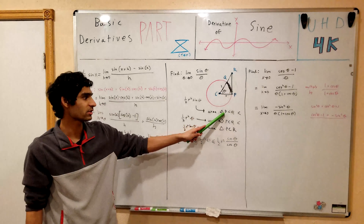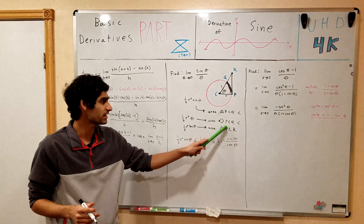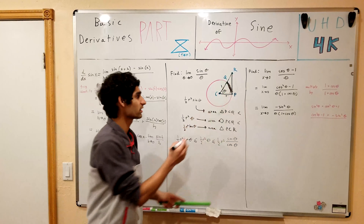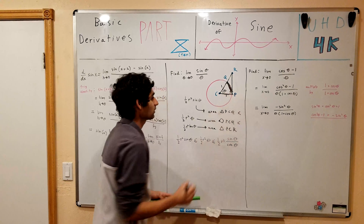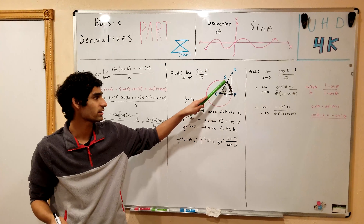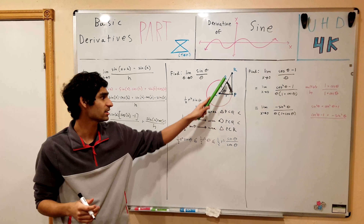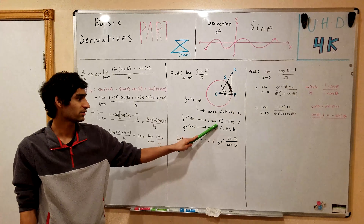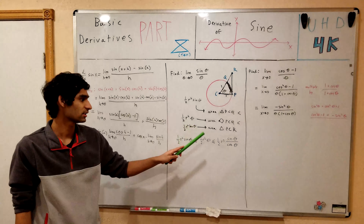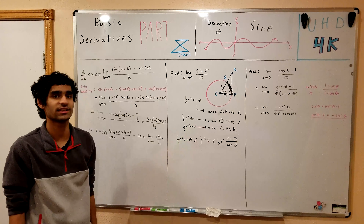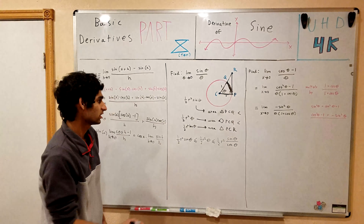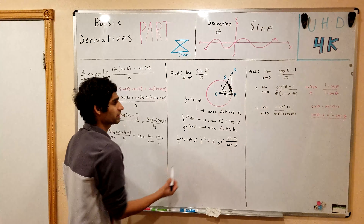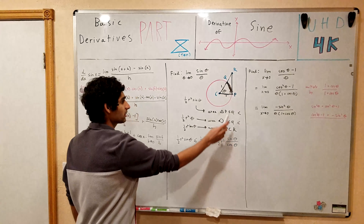The area of triangle PCQ is smaller than the area of the sector PCQ. This is a right triangle, and the entire sector PCQ is contained within the larger triangle PCR. The area of triangle PCQ is one-half R squared sin theta. The area of sector PCQ is one-half R squared theta. And the area of triangle PCR is one-half R squared tan theta. Writing out our inequality: the area of the smaller triangle is less than or equal to the area of the sector, which is less than or equal to the area of the larger triangle PCR.